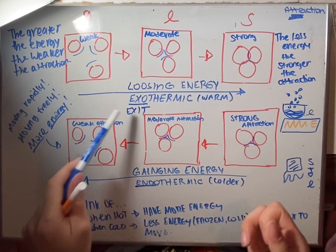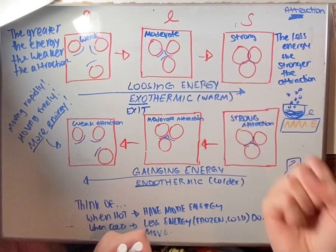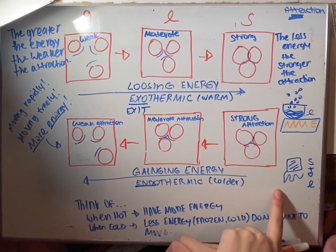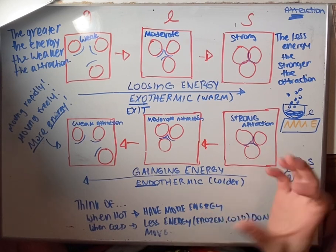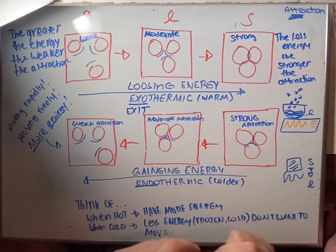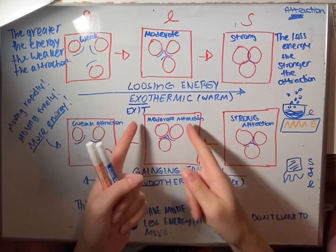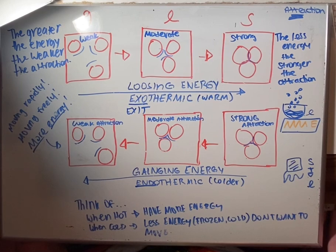Exothermic would be like wood burning in a fire. If you touch it, it's going to be warm — that's how you know it's exothermic. And if you touch ice, you know it's endothermic because it's going to be cold. That's basically this explanation of the difference between exothermic and endothermic. Hope that helped.